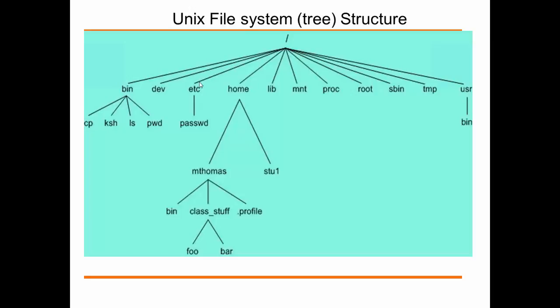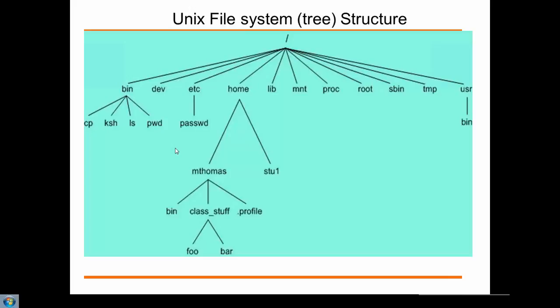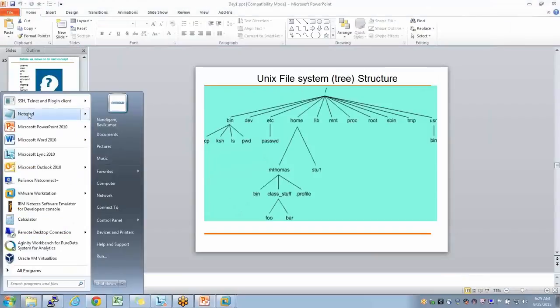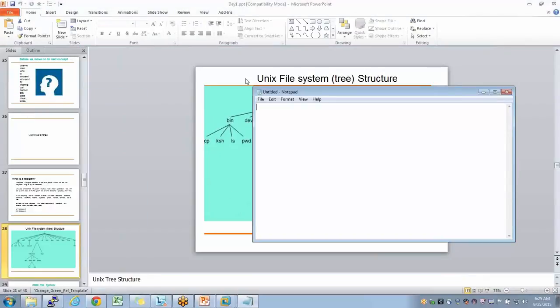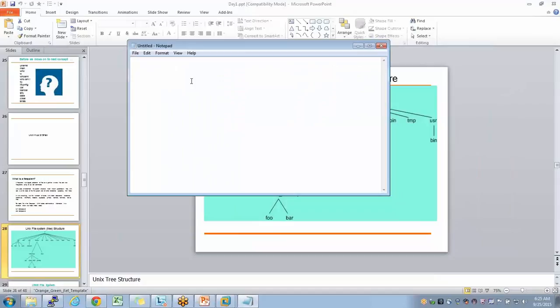In Windows, we call it a folder; in Unix, we call it a directory. My Computer in Windows is comparable to forward slash in Unix. C Drive or D Drive in Windows can be compared to file systems in Unix.